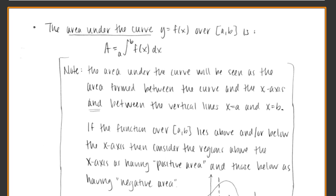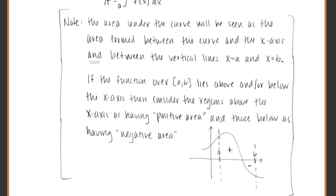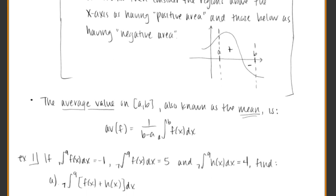Whenever we consider the area under the curve, we always measure from the curve to the x-axis — we don't go past the x-axis. If part of the graph goes below the x-axis during the interval, the area above is considered positive and the area below is negative. Lastly, the average value over a closed interval A to B — also called the mean — is 1 over the length of the interval times the definite integral.